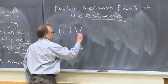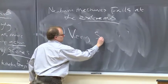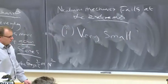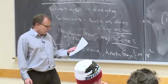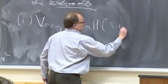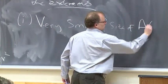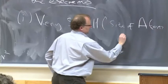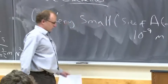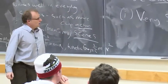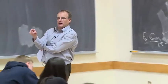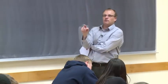One extreme is very small. If things are really, really small — and by small I mean basically the size of an atom, which is about 10 to the minus 9 meters — when you get into that really small world, Newtonian mechanics is replaced by another branch of physics.